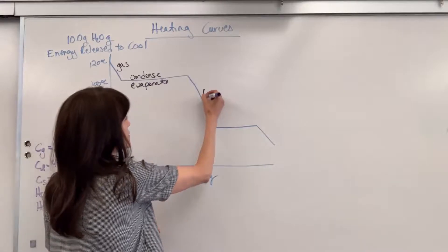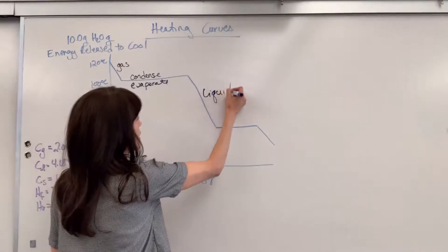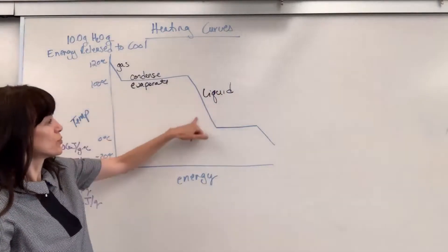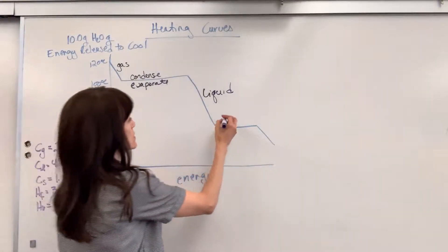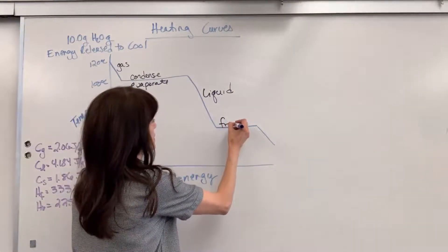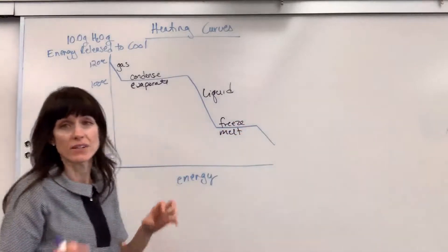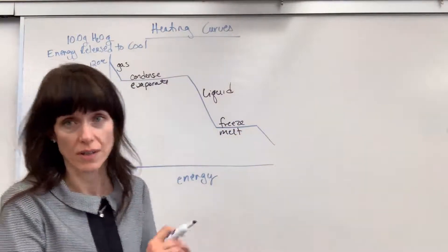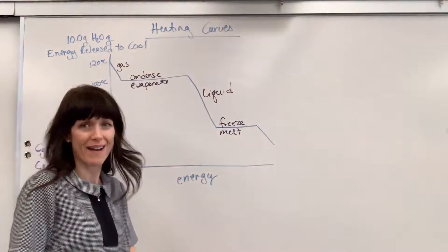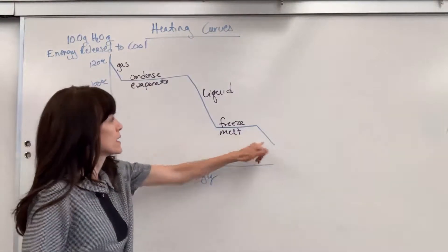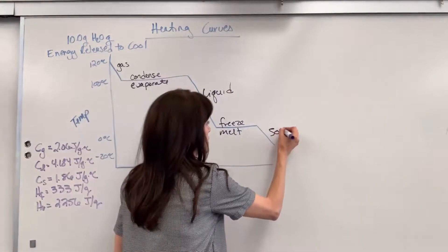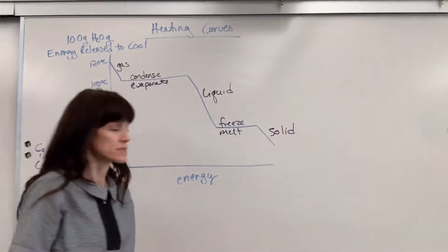Right here we're going to have the liquid. Here is cooling the liquid, and then right here we are going to freeze and melt. I have our stellar custodians changing a light bulb for me, so you'll hear them in the background. Now right here is where we have our solid. There's the solid.